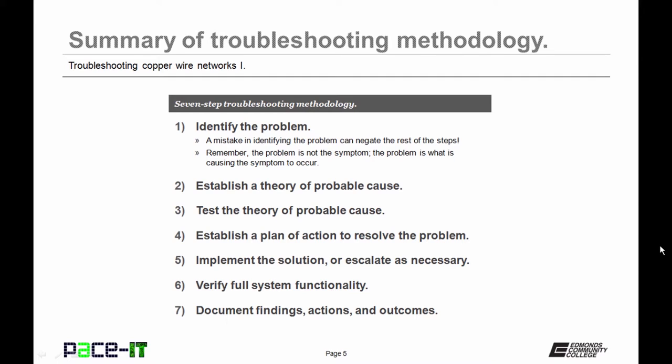Step three, test the theory of probable cause. Once you have tested the theory of probable cause, move on to step four. Establish a plan of action to resolve the problem. Step five is implement the solution or escalate as necessary. Step six is to verify full system functionality. And your last step, step seven, is to document findings, actions, and outcomes. And there we have a brief review of the seven-step troubleshooting methodology.